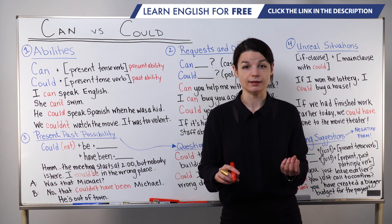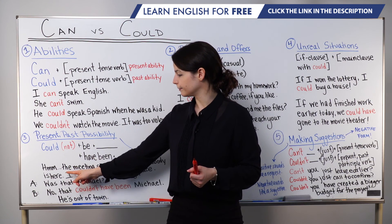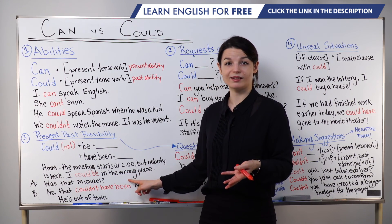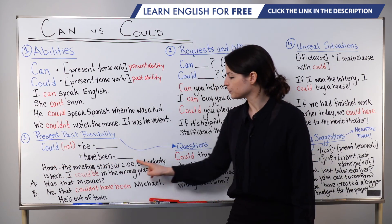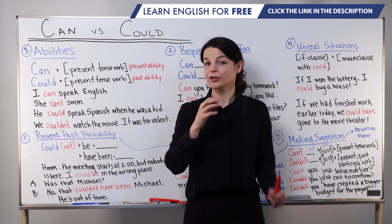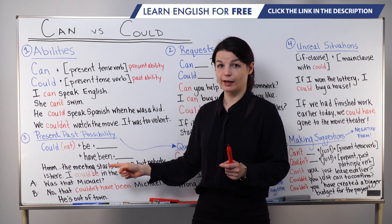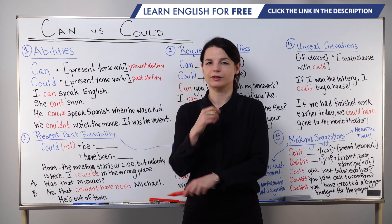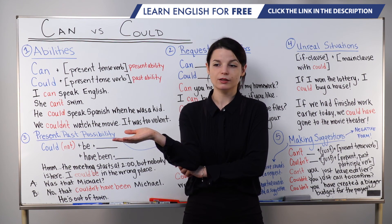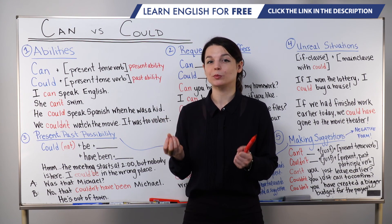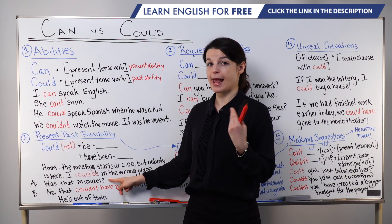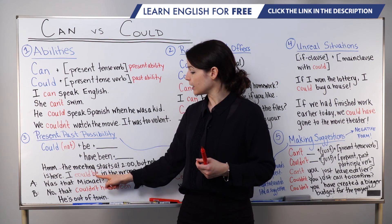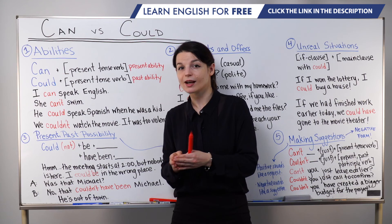Let's look at some example sentences. The meeting starts at two, but nobody's here. I could be in the wrong place. Here is could be — situation and context are important. The speaker is waiting for a meeting that starts at two, nobody is here, so the speaker thinks: I could be in the wrong place. Another way to say that is: it's possible I am in the wrong place. Could be expresses this possibility — there's a possibility I'm in the wrong place.